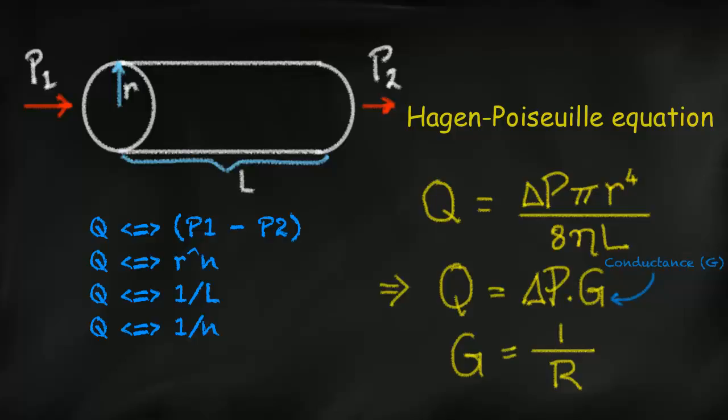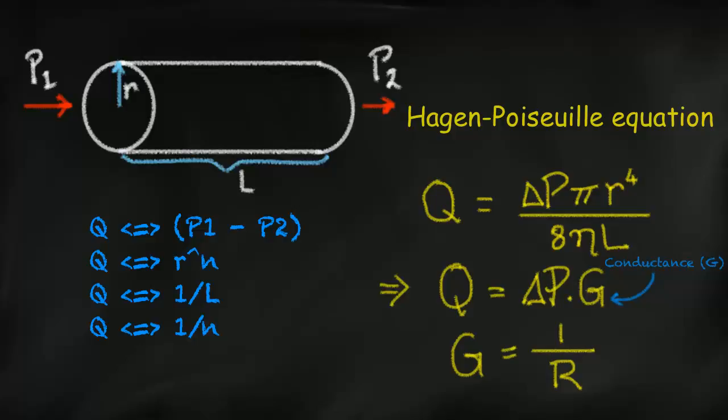The Hagen-Poiseuille equation describes how the flow is the product of the pressure differential and conductance of a liquid. Conductance is represented here by the letter G. Conductance is the description of how easy it is for a liquid to pass through a tube. Conductance is inversely related to the resistance to flow. As you can see, the Hagen-Poiseuille equation can be used to describe the relationship between cardiac output and mean arterial blood pressure.